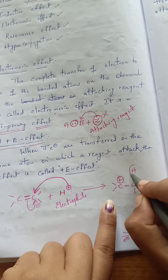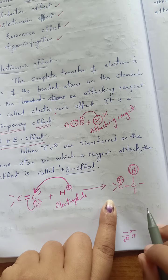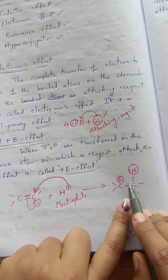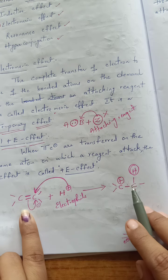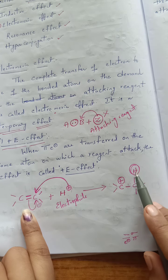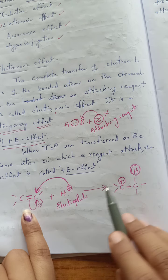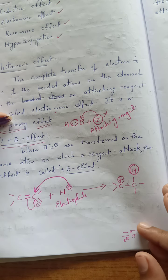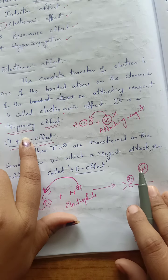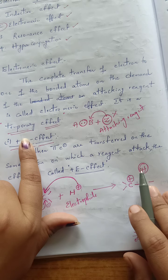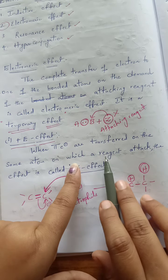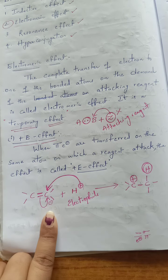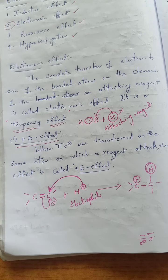Whenever hydrogen is eliminated as H+ again, the bonded electrons reform the pi bond and we get back the alkene. This demonstrates the temporary nature: as soon as the attacking reagent is removed, displacement of electrons cannot take place. It is a temporary effect arising only due to the attack of the attacking reagent.